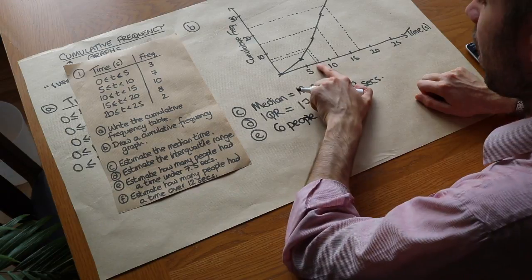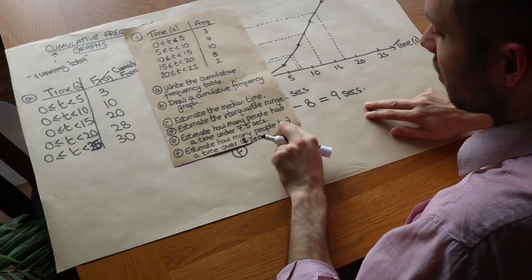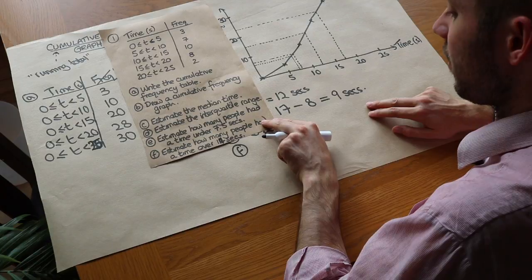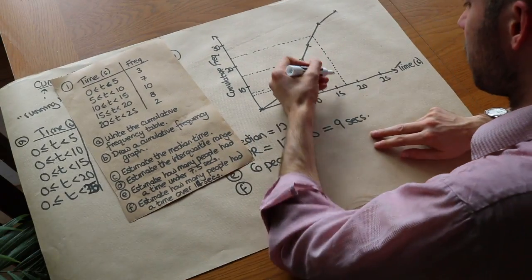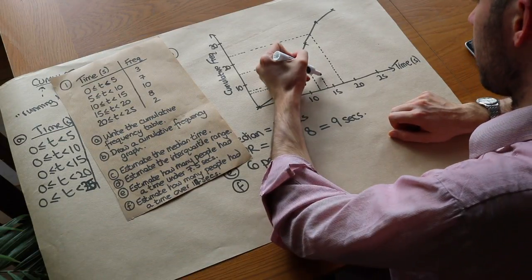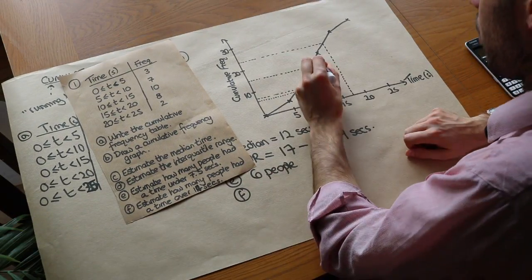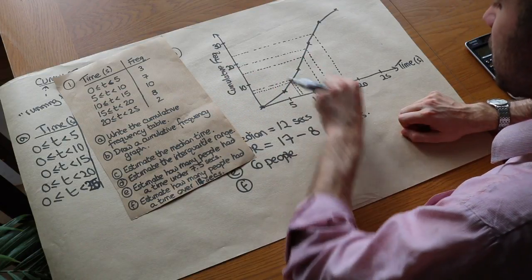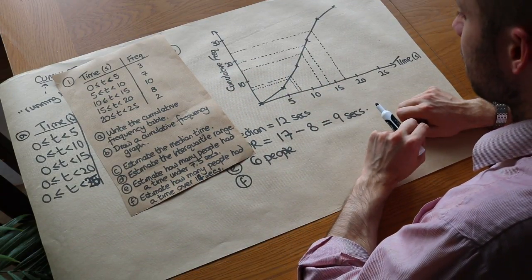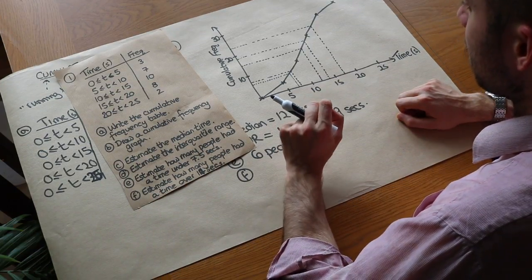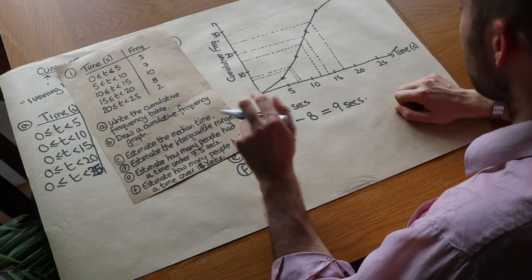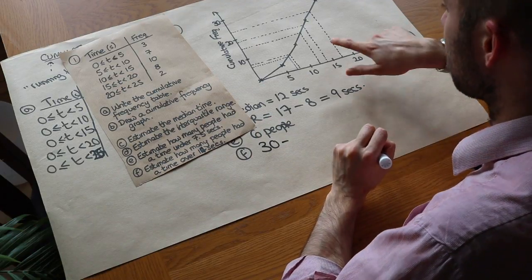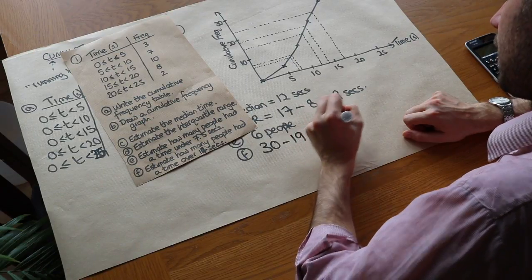For the last question, estimate how many people had a time of over fourteen seconds. We find how many had a time of up to fourteen seconds by going to the fourteen-second mark on the time axis, up to the line graph, and across — it looks like nineteen people had a time of up to fourteen seconds. Since we have thirty people total, thirty minus nineteen gives us roughly eleven people who had a time of over fourteen seconds.